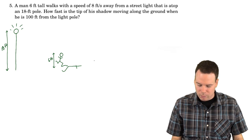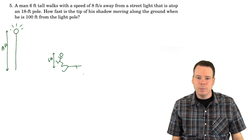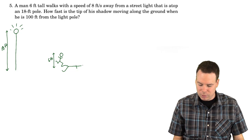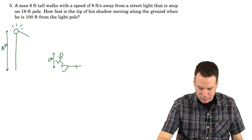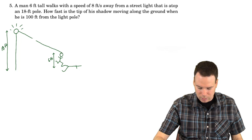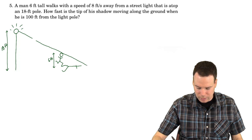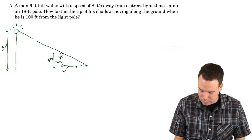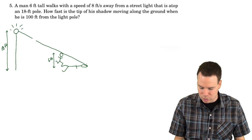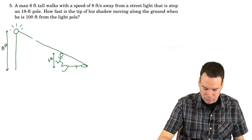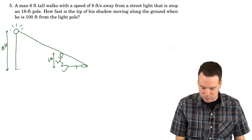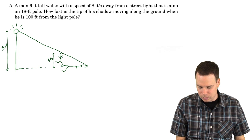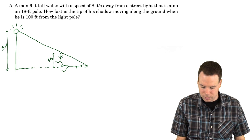We need to know where the tip of the shadow is. The tip of the shadow is obtained by that beam of light that just clips the top of the man's head — that gives us the tip of the shadow. I'll complete the rest of the diagram showing the road the man is walking along.